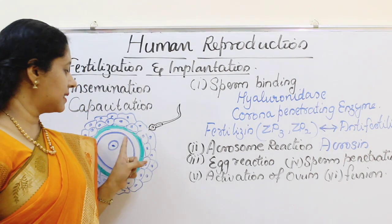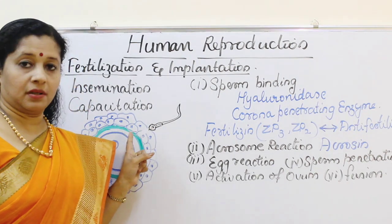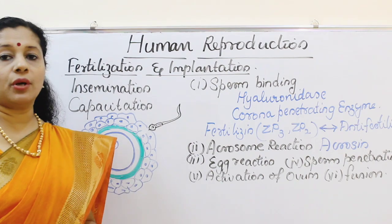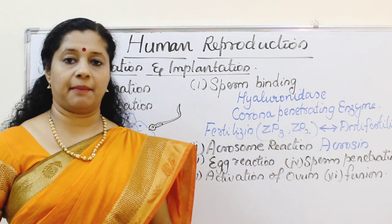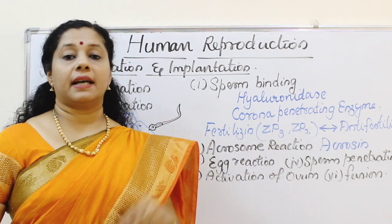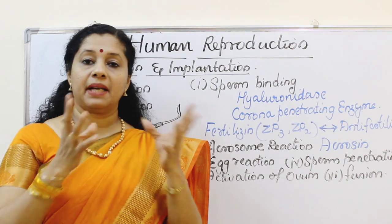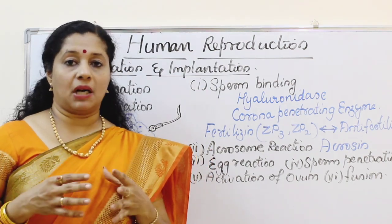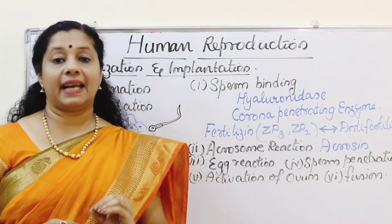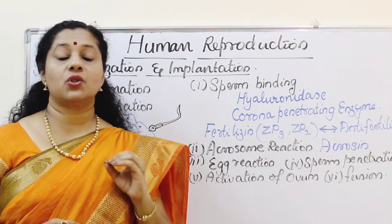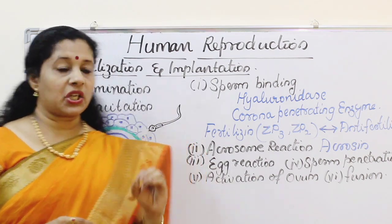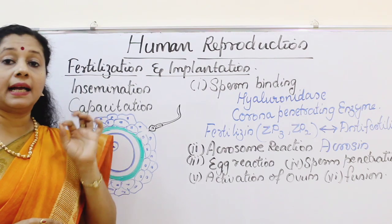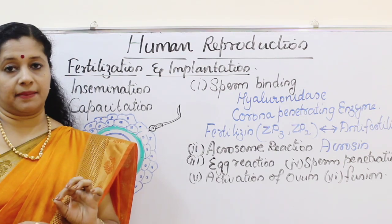Once the sperm comes in contact with the zona pellucida, the acrosome reaction happens. The acrosome membrane dissolves, and as a result all the enzymes inside come out. This includes an enzyme called acrosin or zona lysin, which can digest the zona pellucida layer at the point of contact.